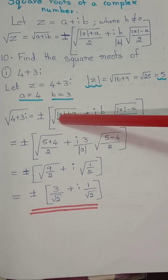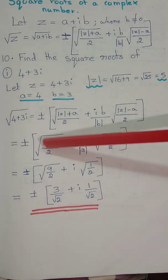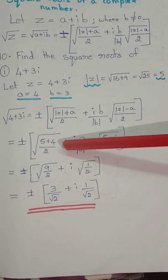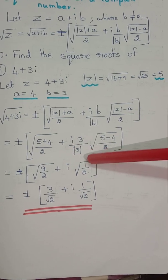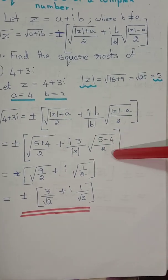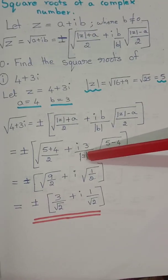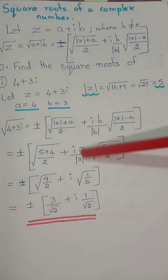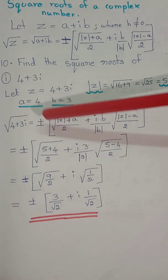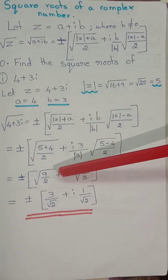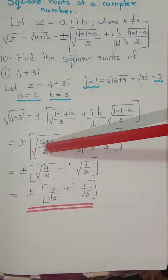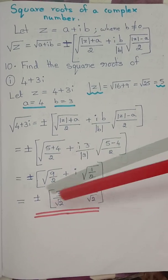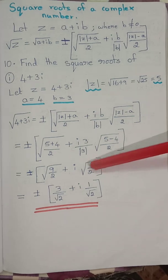Substituting modulus of z as 5 and a as 4: 5 plus 4 by 2, plus i3 by modulus of 3, times root of 5 minus 4 by 2. Simplifying: 5 plus 4 is 9 by 2, and 5 minus 4 is 1 by 2.